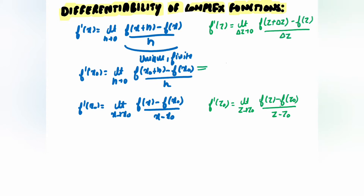In the complex case, f'(z₀) equals the limit as Δz approaches 0 of [f(z₀ + Δz) - f(z₀)] / Δz. This is similar — in place of h we use Δz, and in place of x₀ we use z₀. The definition is very similar: if the limit is unique and finite, then the function is differentiable.